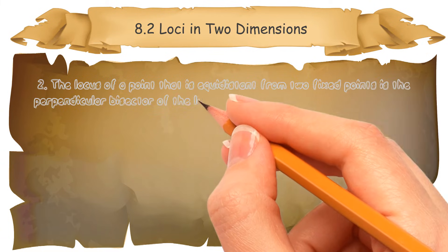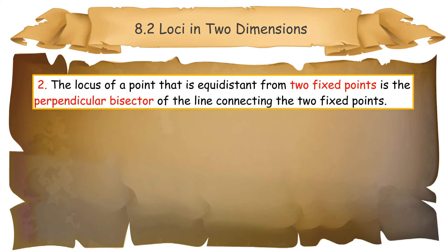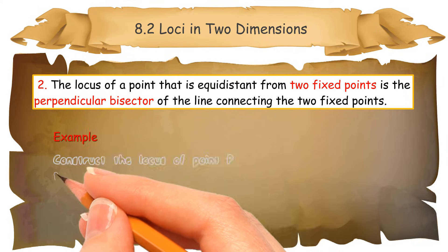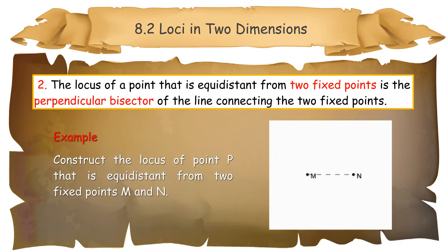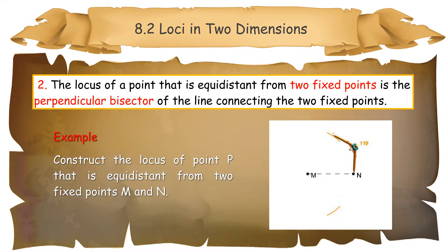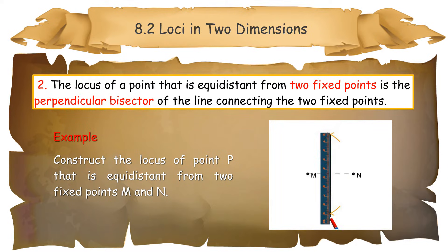Two: the locus of a point that is equidistant from two fixed points is the perpendicular bisector of the line connecting the two fixed points. Example: construct the locus of point P that is equidistant from two fixed points M and N. Mark two small arcs using a pair of compasses, with a gap set at more than half of the length of MN, from point M. With the compasses set at the same gap, mark the intersecting arcs from point N. Connect the two points of intersection with a straight line.